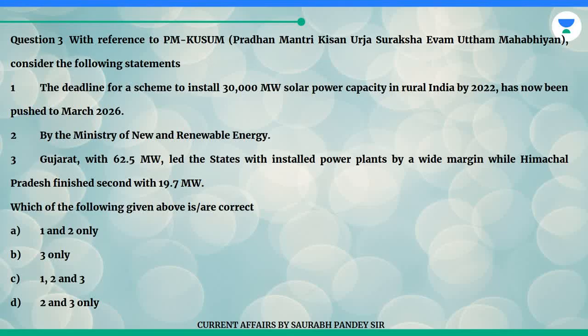Question 3. With reference to PM Kusum — Pradhan Mantri Kisan Urja Suraksha evam Uttam Mahabhiyan — consider the following statements. One: The deadline for the scheme to install 30,000 MW solar power capacity in rural India by 2022 has now been pushed to March 2026 by the Ministry of New and Renewable Energy. Three: Gujarat, with 62.5 MW, led the states with installed power plants by a wide margin, while Himachal Pradesh finished second with 19.7 MW.